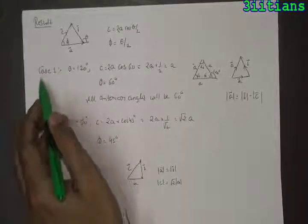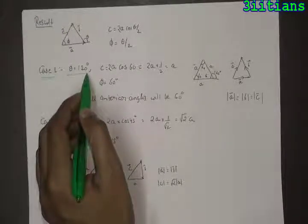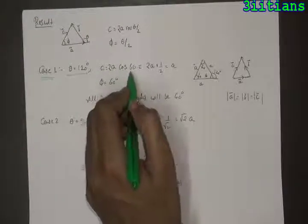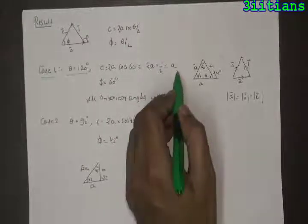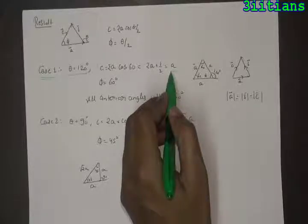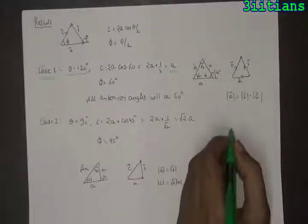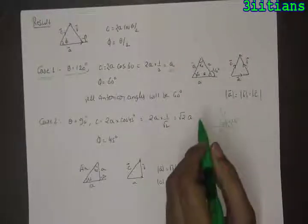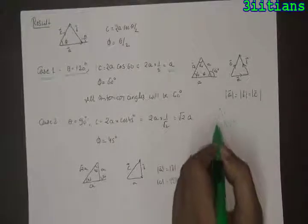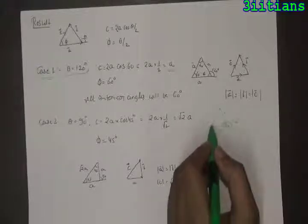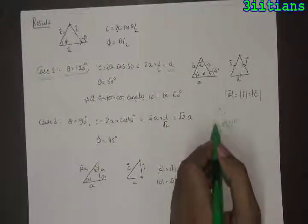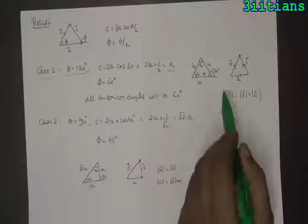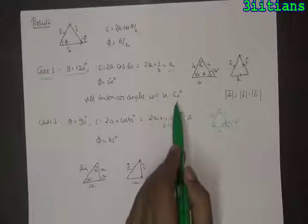For example, taking the special case of theta equal to 120 degrees, the magnitude of c vector will be equal to 2a cos 60, which equals 2a times 1/2, which equals a. So the third side will also be of the same length a. The first vector and the second vector make an angle of 120 degrees, so this angle will be equal to 60 degrees. The third side will also be of the same magnitude as the other two sides — this is actually an equilateral triangle. All interior angles will be equal to 60 degrees.